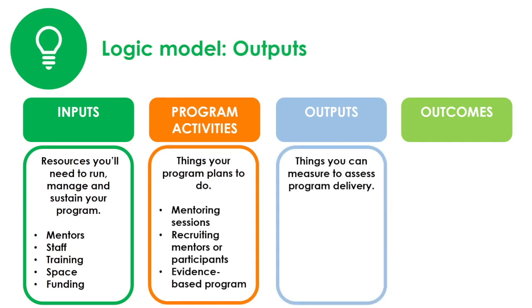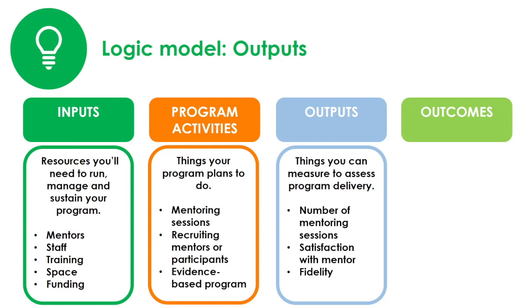Outputs are things you can measure to assess program delivery. Outputs could be things like how many mentoring sessions you actually attend, or participants' satisfaction with their mentor. They can also measure fidelity, which is basically whether the program activities are being run as planned. Fidelity can be measured by having staff report on what parts of the program they actually did versus what they had planned to do, or by having someone observe an activity to see if it was done the way it was intended.